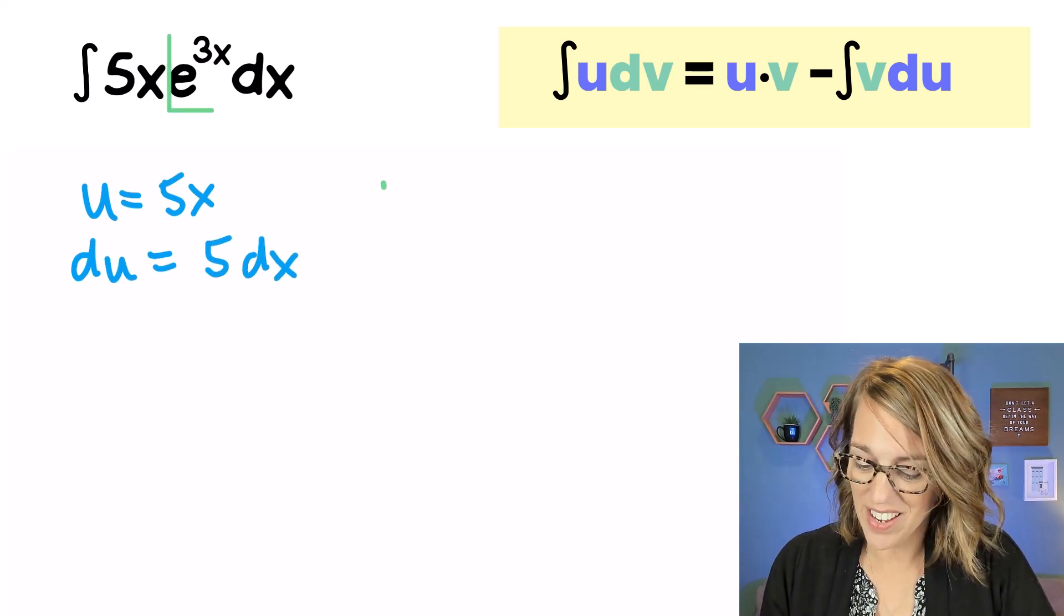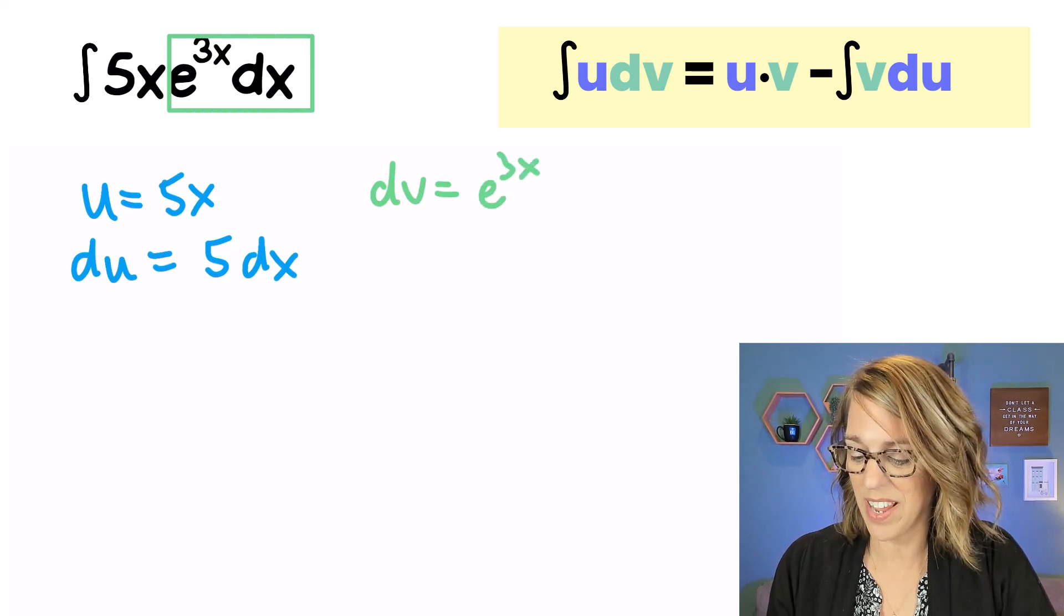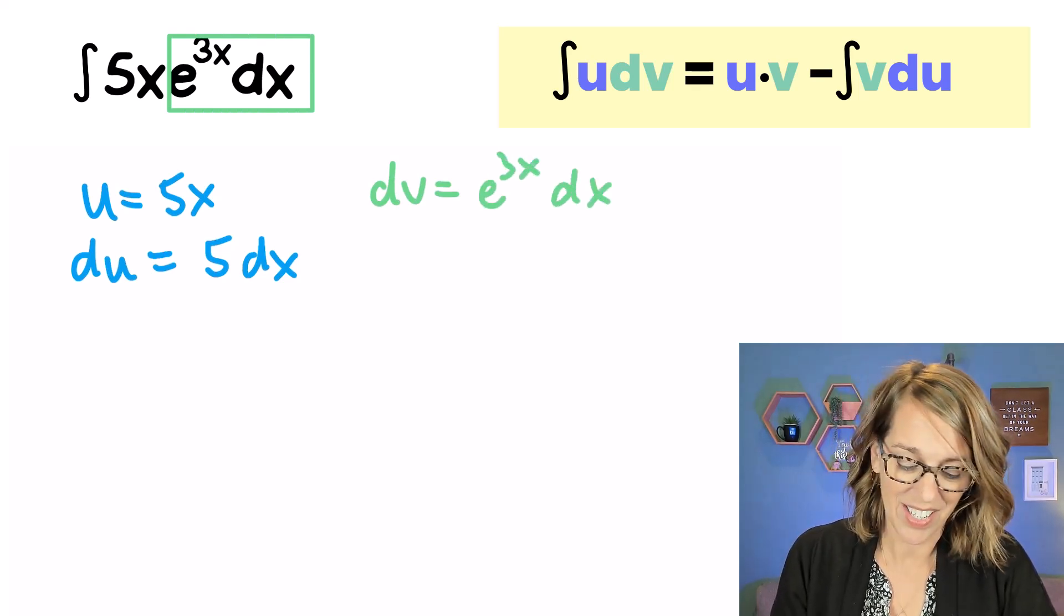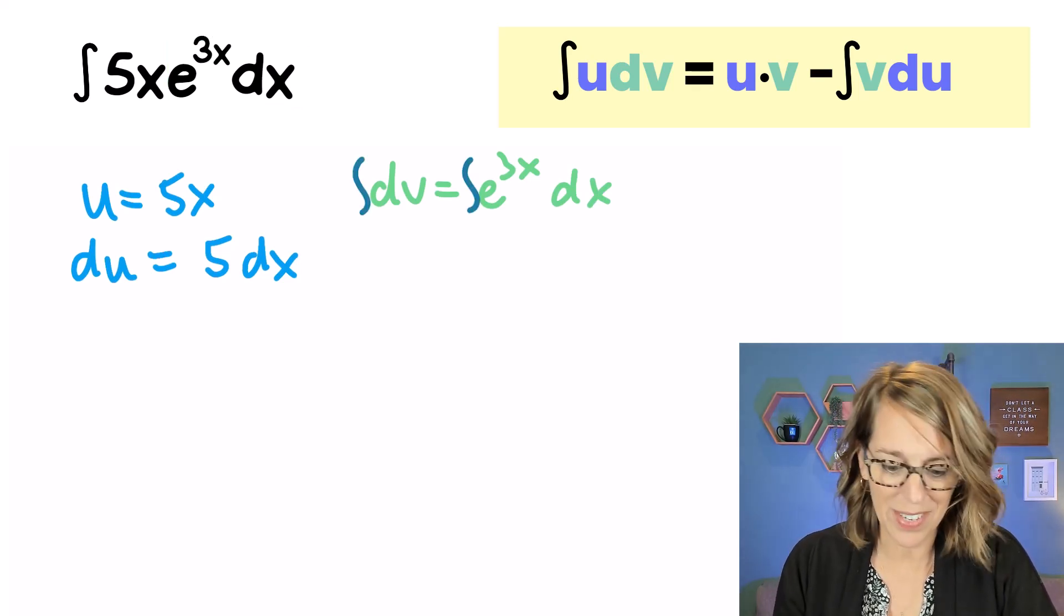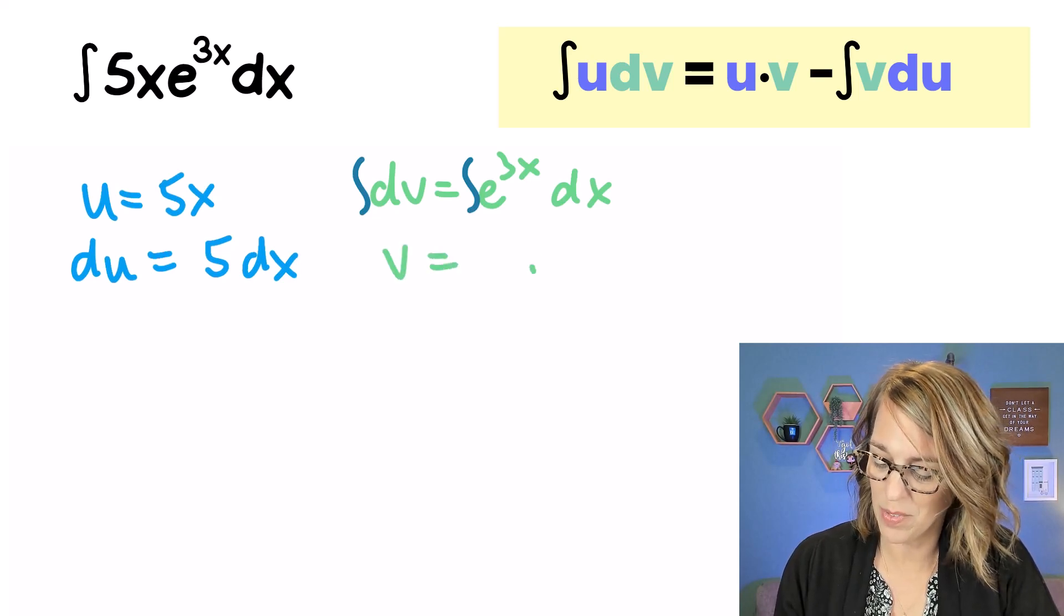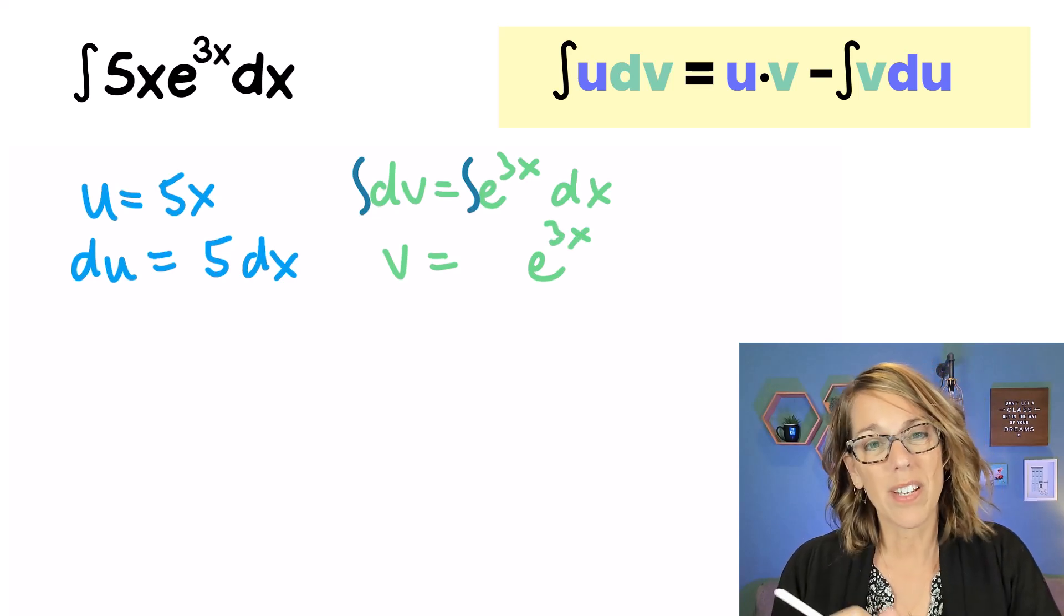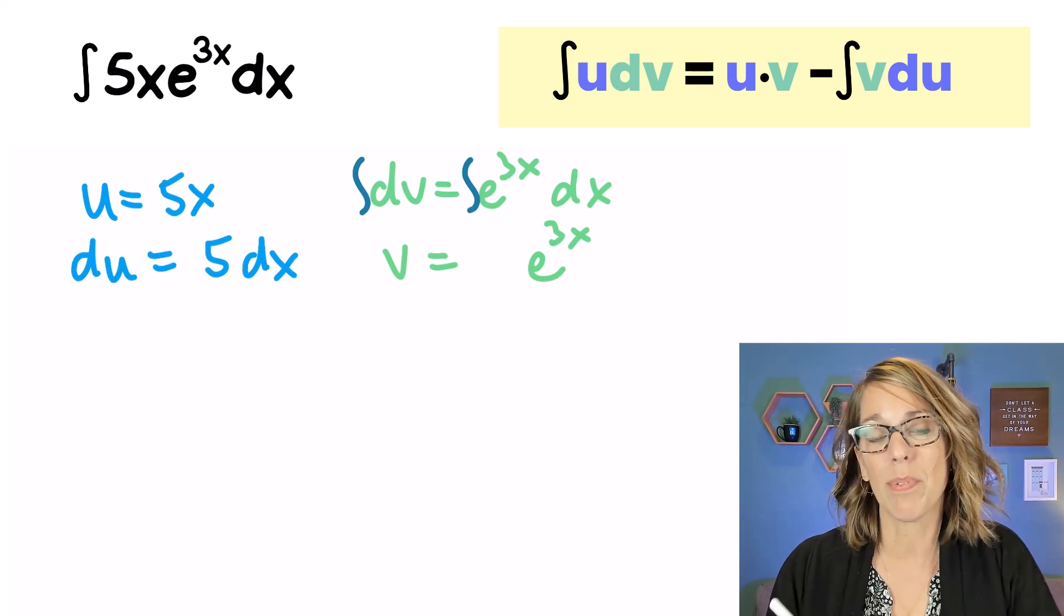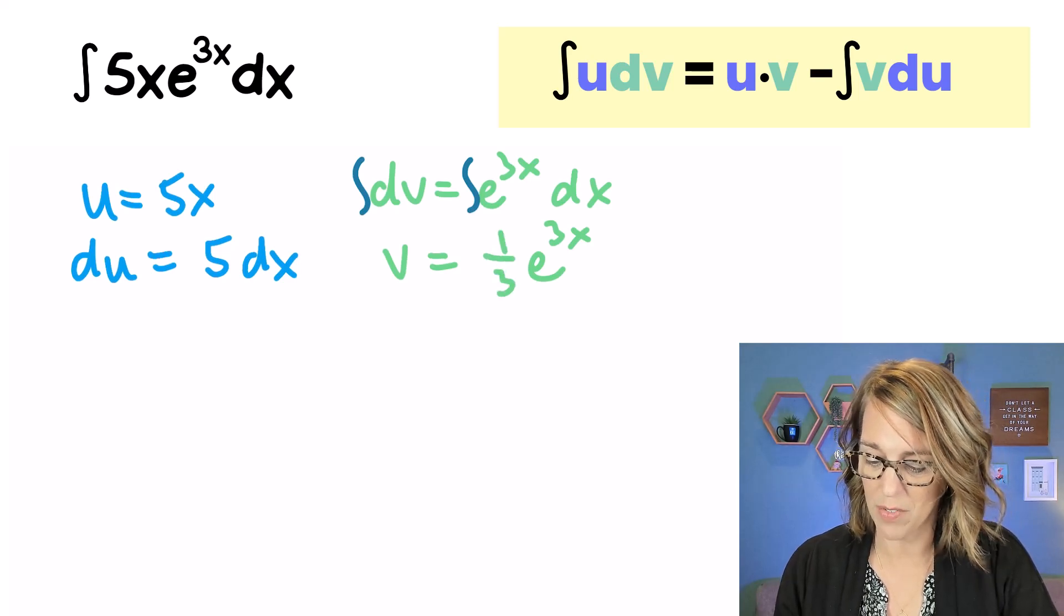This means that everything else in our integral is our dv. So we get an e to the 3x dx. To find v, I'm going to find the antiderivative. And I end up with v is equal to, I get my e to the 3x back. But without using a u substitution, I can just multiply by a 1 third out in front. So I get a 1 third out in front here.